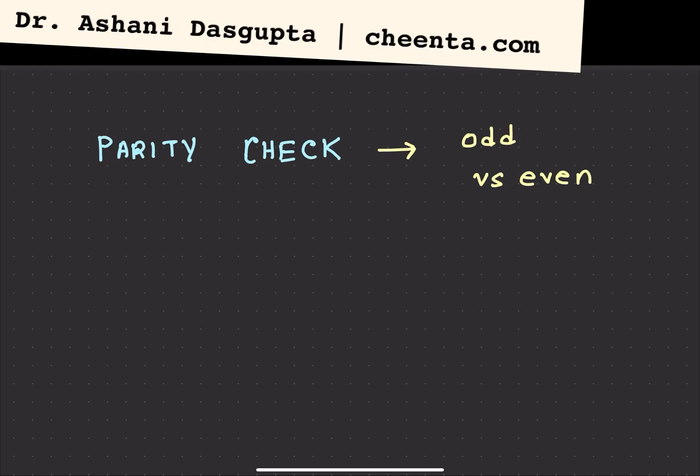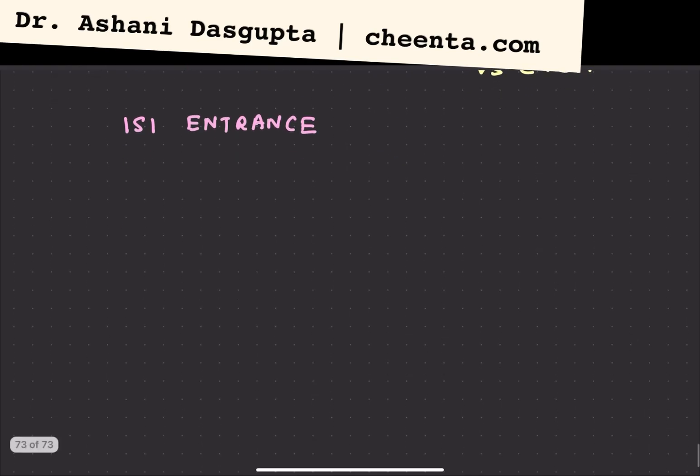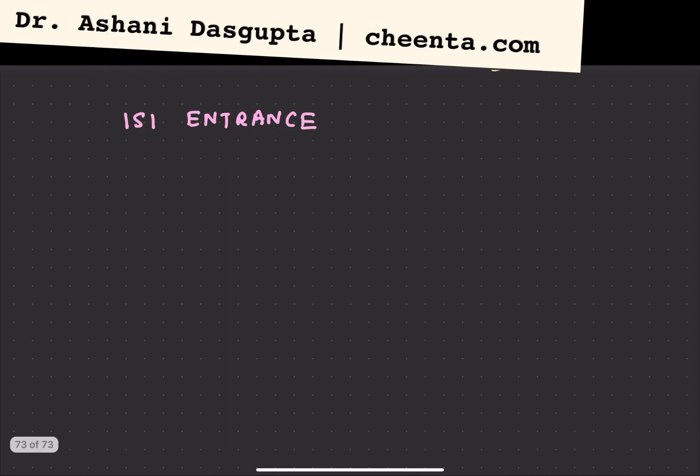Let's learn a little bit more about it using this problem from ISI entrance, Indian Statistical Institutes, BSTAT, BMath entrance. Here is the problem. Suppose you have an equation x square minus 2y square equals to 1, and it's given that x and y both are prime numbers.